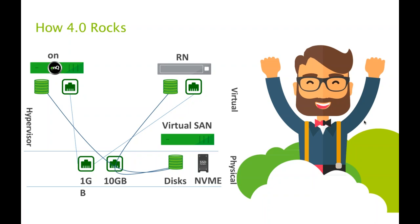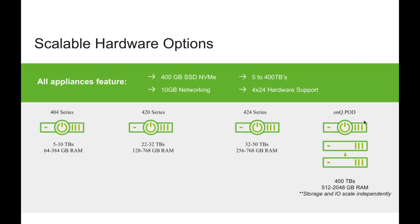We upgraded all architecture to the latest Dell hardware — Dell 730s and 530 boxes depending on size. Our main appliance range starts with the 404 series at 5 to 10 terabytes, the 420 series at 22 to 32 terabytes, and the 424 at 32 to 50 terabytes in a single 2U appliance with 256 gigs of memory upgradable and two 14-core processors. That gives plenty of processing capability to handle up to about 50 VMs — designed not just to boot servers when needed but to actually run the stack.